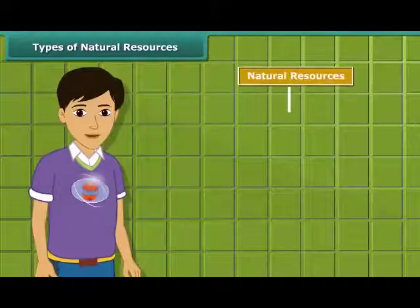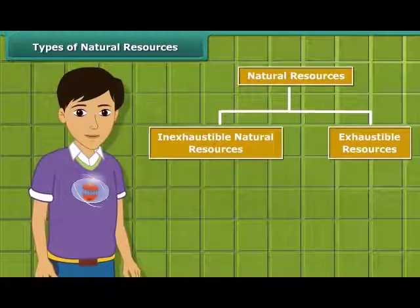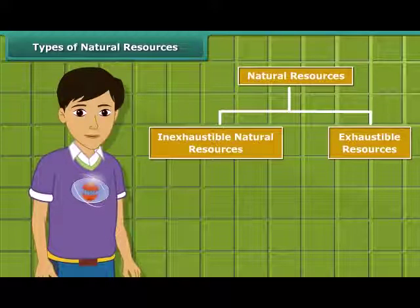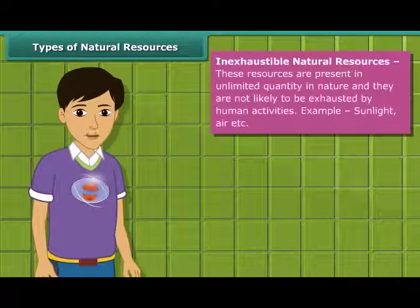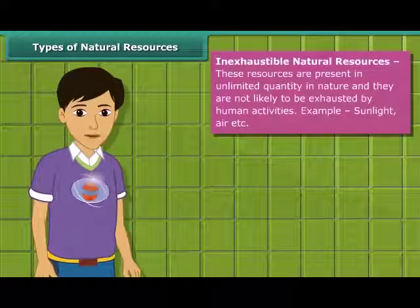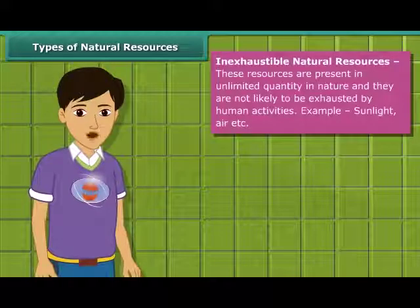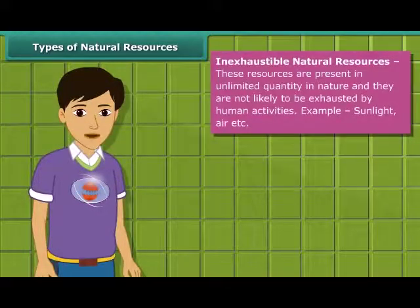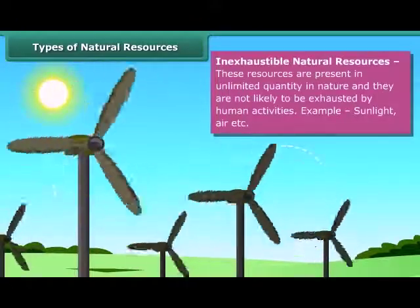Natural resources can be broadly classified into two categories: inexhaustible natural resources and exhaustible resources. Inexhaustible natural resources are present in abundance, hence it is unlikely that they will be exhausted by any human activity. Sunlight and air are examples of such resources.